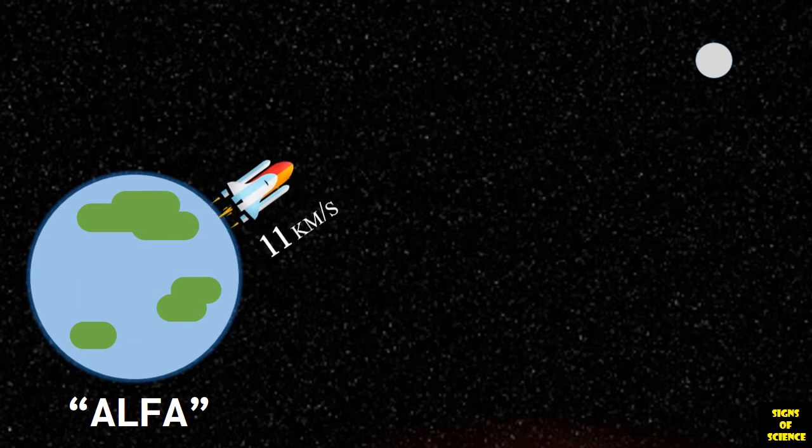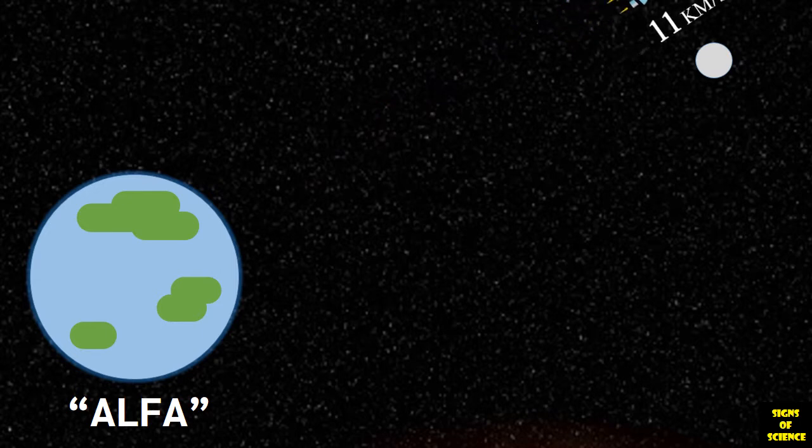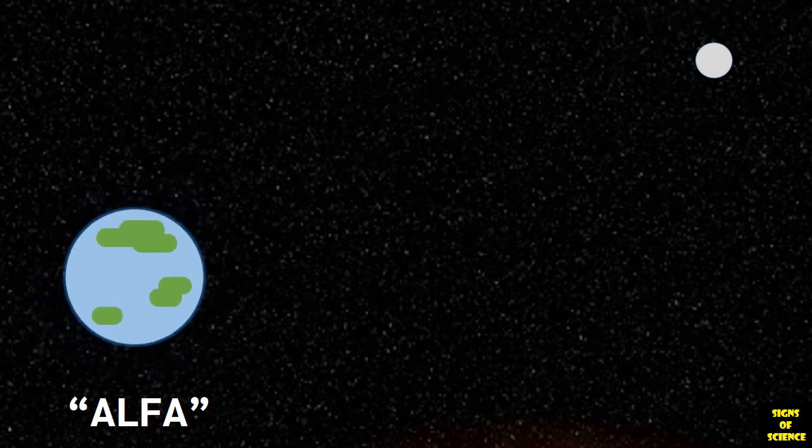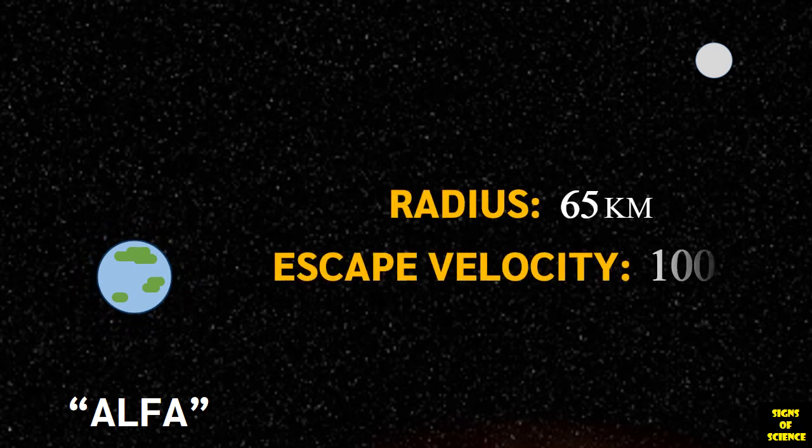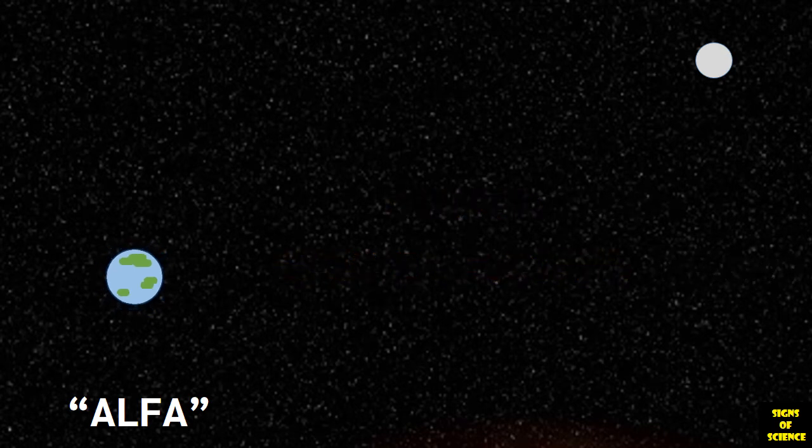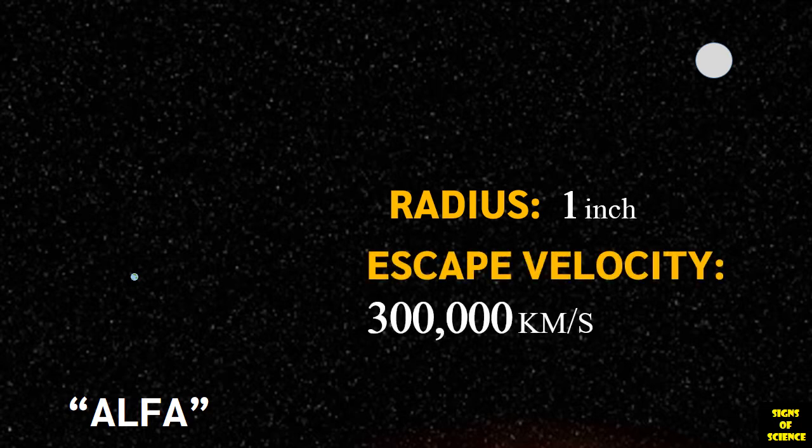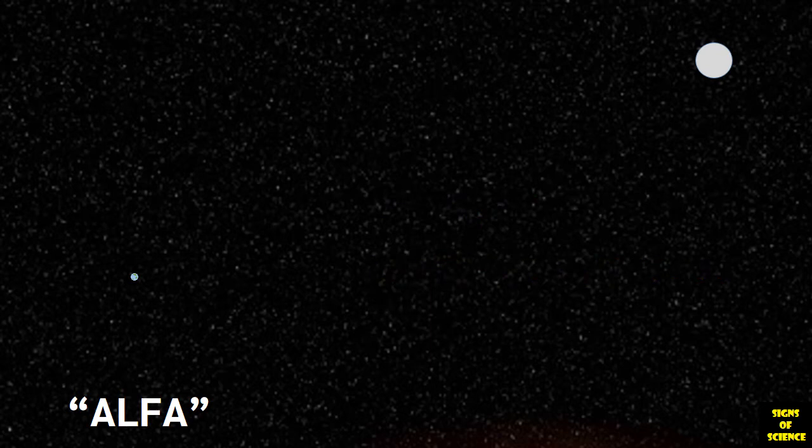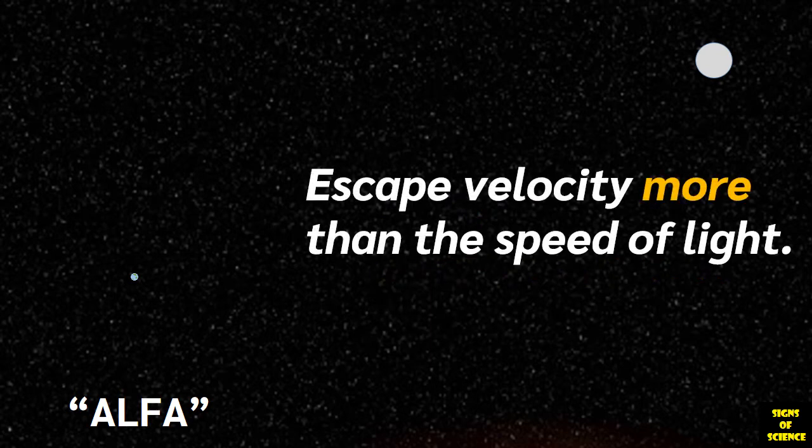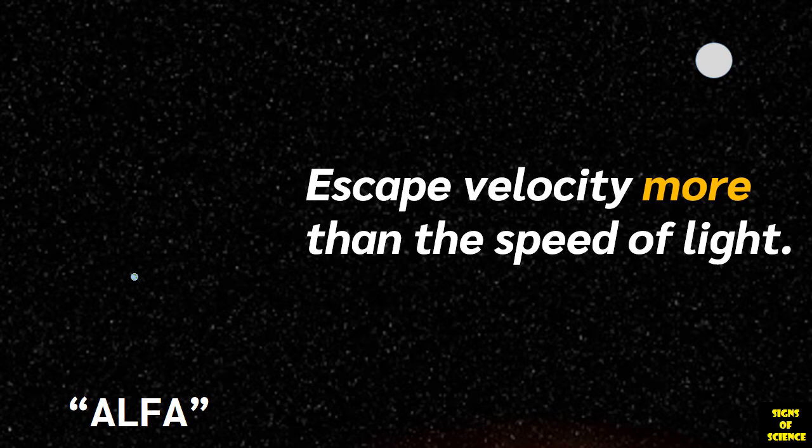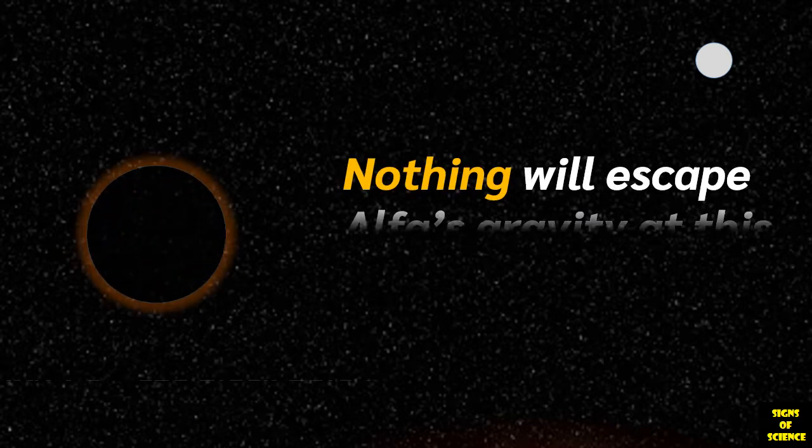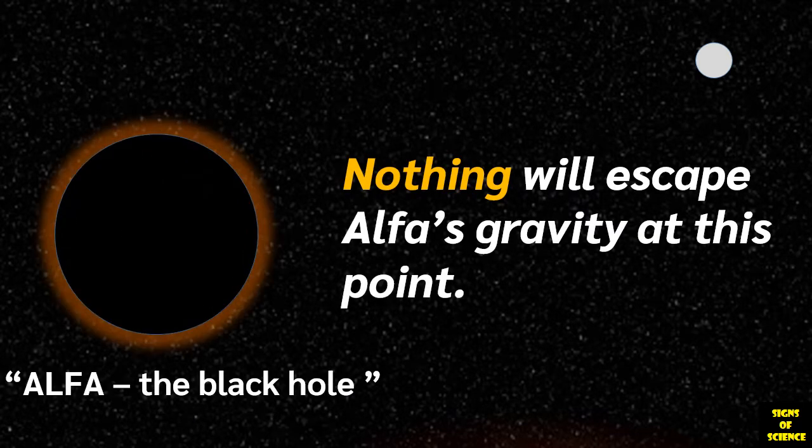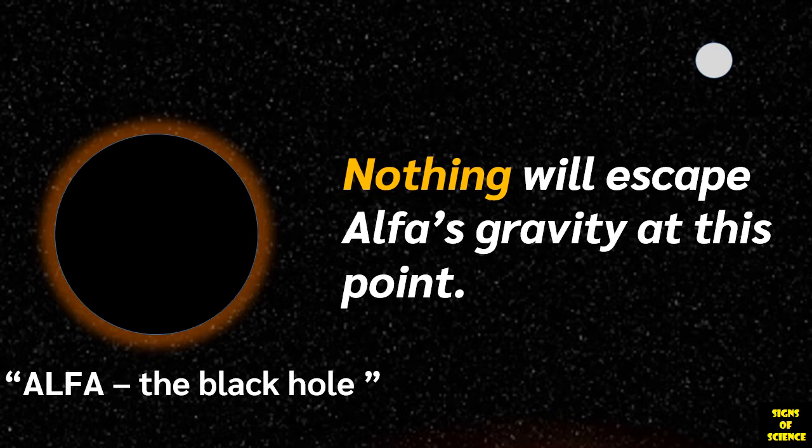Suppose if you are on planet alpha and want to go to space then your rocket would need to attain speed of 11 km per second in order to escape alpha's gravity. Now, if we compress alpha's mass such that its radius becomes 65 km then its escape velocity would be around 100 km per second. And if we compress it further to a very small radius of 1 inch then it would have an escape velocity of higher than 300,000 km per second or more than the speed of light. Which means at this point even light would not be able to escape this planet's gravity. Since light is the maximum speed that can be achieved in the universe, that means nothing will escape this planet at this point. As our planet alpha would now have turned into a black hole.